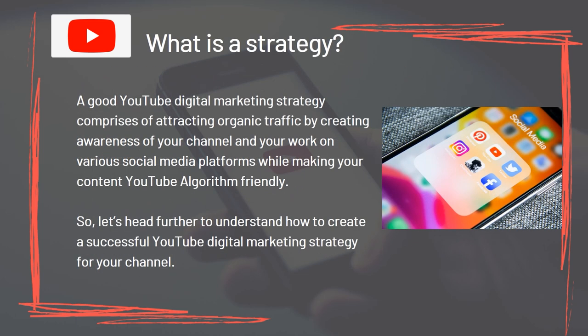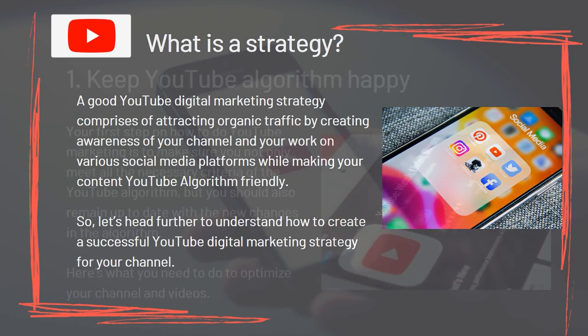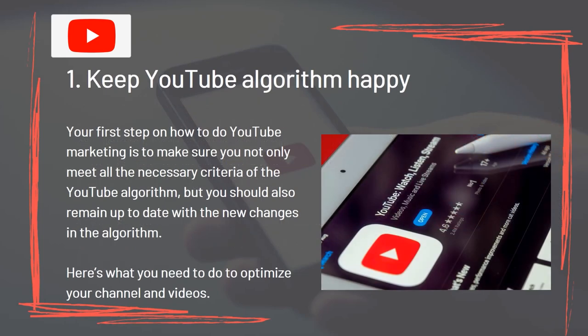What's a strategy? A good YouTube digital marketing strategy comprises of attracting organic traffic by creating awareness of your channel and your work on various social media platforms while making your content YouTube algorithm friendly. The first step on how you do YouTube marketing is to make sure you not only meet all the necessary criteria of the YouTube algorithm but you should also remain up to date with the new changes in the algorithm. Here is what you need to do to optimize your channel and videos.